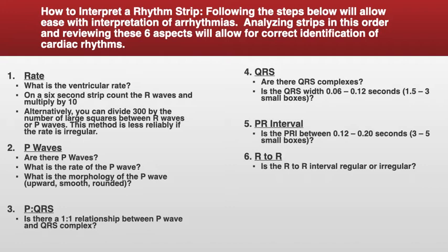Next we look at the QRS complex itself — is it wide? The normal QRS complex is 0.06 to 0.12 seconds. You get that number by counting the number of small boxes and multiplying by 0.04, and that will give you the size of your QRS complex. Then you're going to look at your P to R interval — from the beginning of your P wave to the beginning of the R wave, count the number of small boxes.